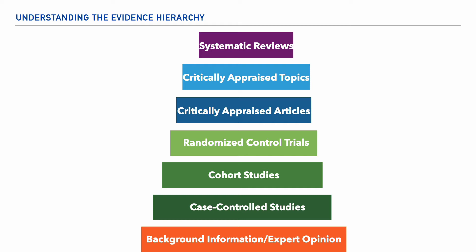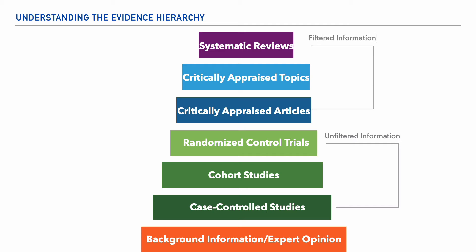So what we'll do next is take just a few moments to describe each of these levels of evidence. But before we get there, let me share with you that the bottom portion of this hierarchy is considered to be unfiltered information, while the top half is considered to be filtered information. What this means is that filtered information has been critically appraised — the research within these levels of evidence have been carefully reviewed with a fine-toothed comb to assess the value, trustworthiness, and validity of the findings. Additionally, the information is much more succinct, helping you to address a specific question or topic of interest.